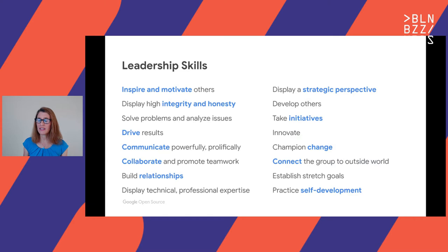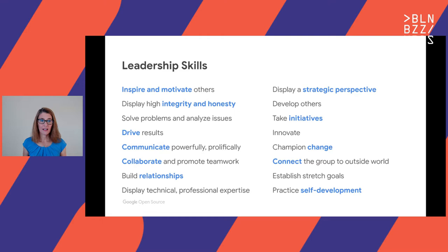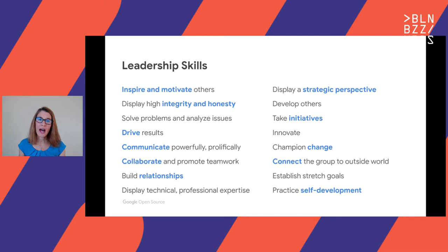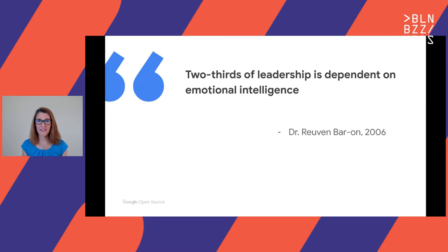You need certain skills to be a leader. From Harvard Business Review research, they identified key skills for good leadership: inspire and motivate, integrity and honesty, drive, communication, collaboration to build teamwork and good relationships, and more. What you see here is that it's not about technical skills — it's about interpersonal skills, core skills. And leadership is actually two-thirds dependent on emotional intelligence, which is at the core of these leadership skills. Unfortunately, this is not an area where we get a lot of training.